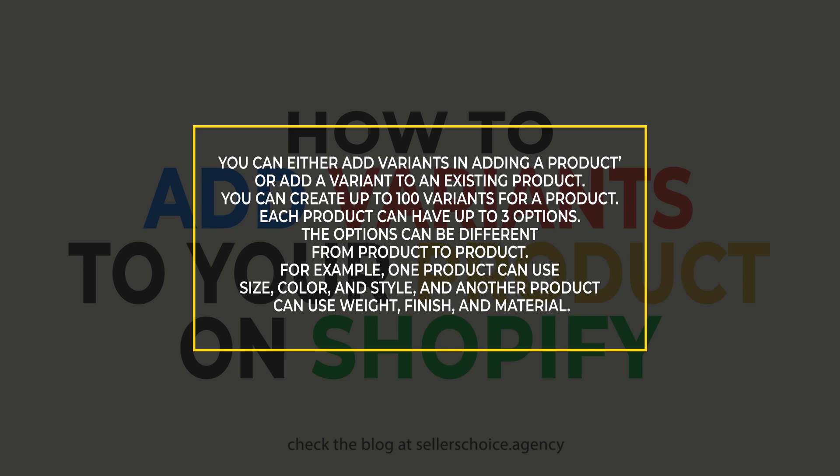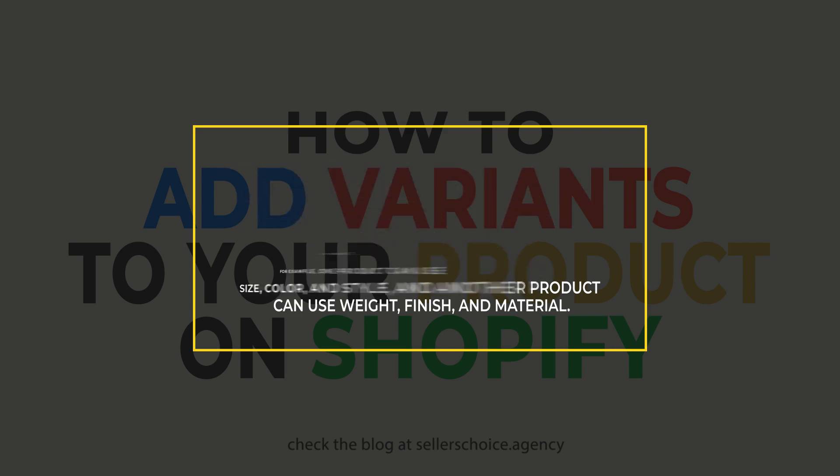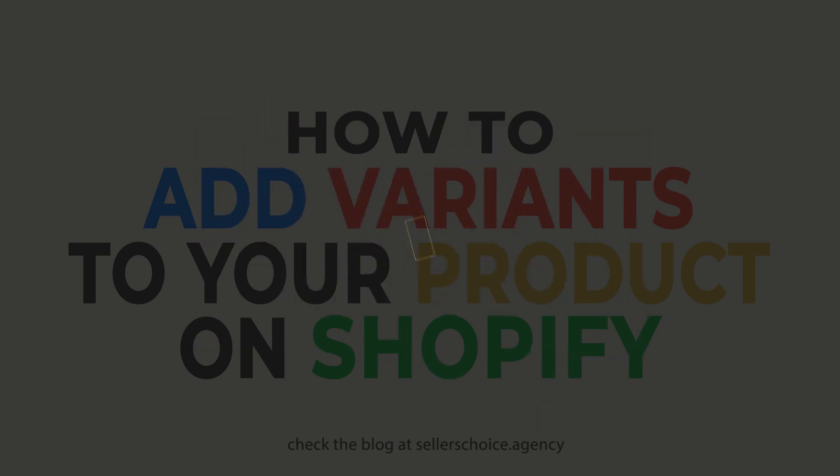Each product can have up to three options, and the options can be different from product to product. For example, one product can use size, color, and style, and another product can use weight, finish, and material.